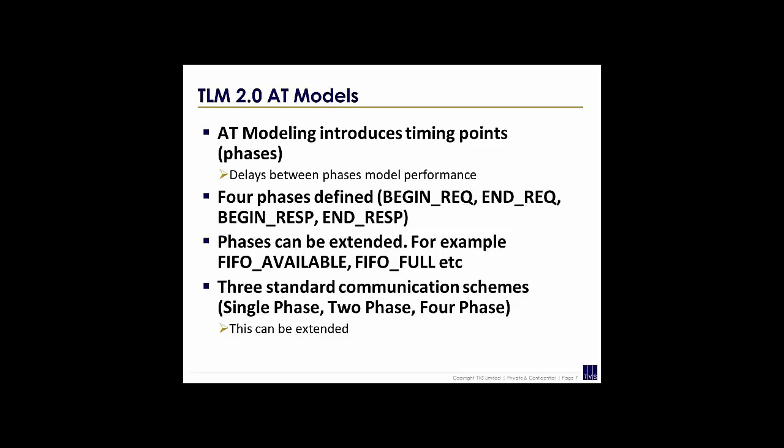In a single phase scheme, you may use begin request to send a payload from one module to another, and the receiving module terminates the communication on receipt. In a two phase scenario, you have a begin request followed by some computation by the receiver, and after a latency the receiver responds back with the result using begin response. In four phase, you can use all four phases — or even more. For example, an AXI-4 bus may have around eight phases for a write operation or six phases for a read operation.